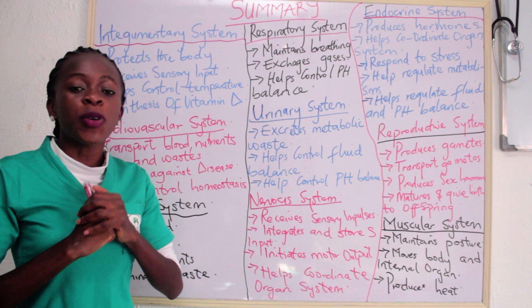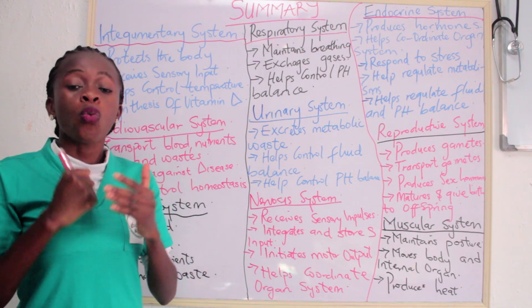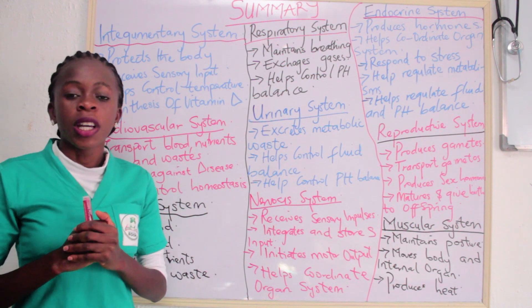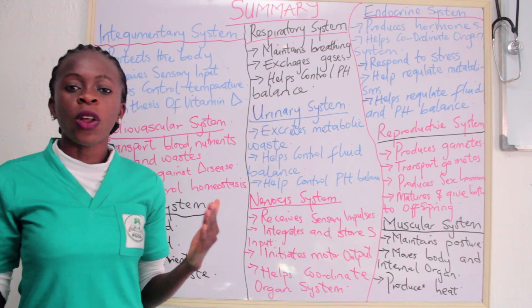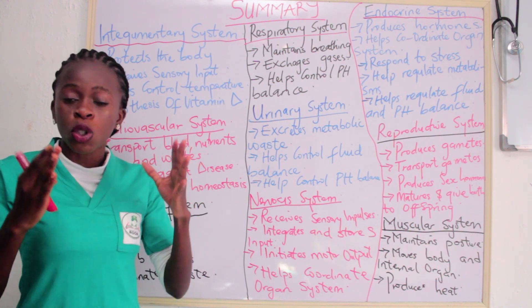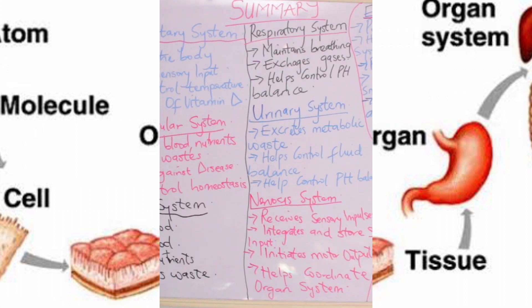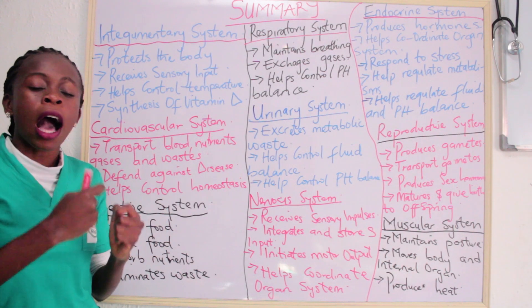Today I'm going to be sharing with you the summary of 11 different systems and what they do in the body. Remember in our elementary biology, we are meant to understand that when similar cells come together, they form tissue. And when similar tissues come together, they form organs. And when organs come together, they form organ systems. So today I'm going to be telling you the function of each system in our body.